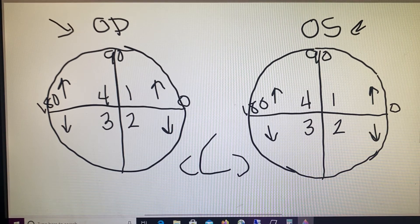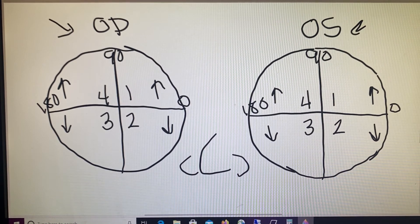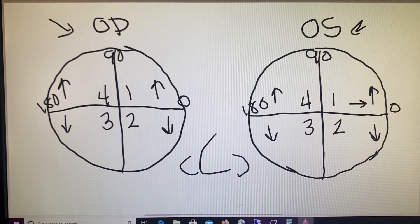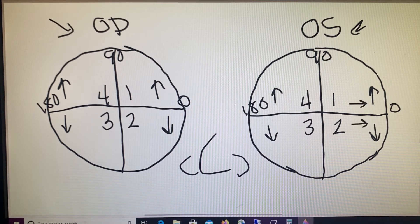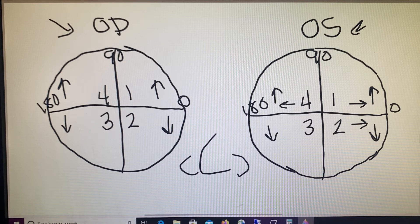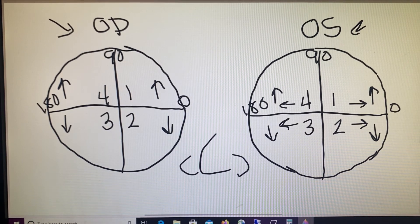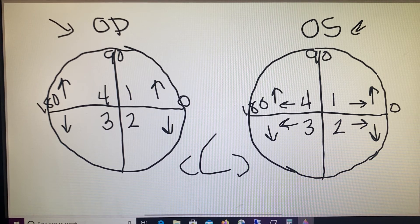And then as we look at quadrants one and two on the left eye for our patient, we see that those are both the direction of out or base out. And in that left eye, we have in quadrants four and three, base in towards the nose. So base out on that left side moves out towards the ear and in towards the nose on quadrants four and three.